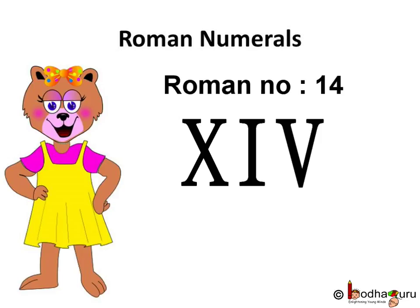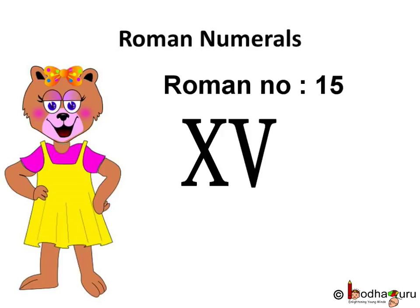14 is 10 plus 4. So the symbol for 10 is X, followed by the symbol for 4, which is I followed by V. So the symbol for 14 is X, I, V. Same way, 15 is 10 plus 5, so X followed by V.